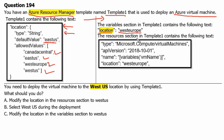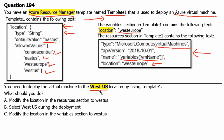The resources section in Template1 contains the following text where we are creating a virtual machine. The name of the virtual machine will be taken from a variable named VMName, and the location of the virtual machine is set to West Europe. You need to deploy the virtual machine to West US location by using Template1.